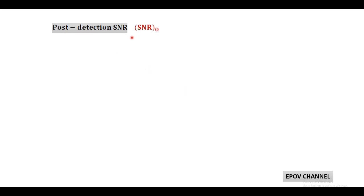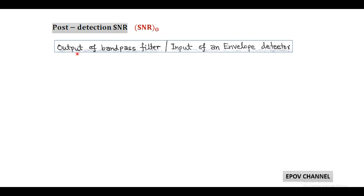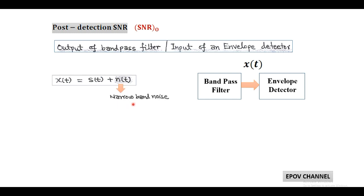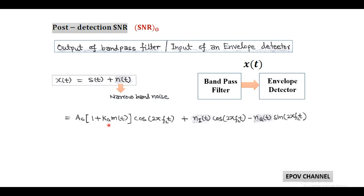Next, we find the output or post-detection SNR. For this, we consider the output of the bandpass filter, or input of the envelope detector, denoted by X(t). Here, X(t) = S(t) + N(t), where N(t) is the filtered or narrow band noise. We substitute S(t) as the double sideband full carrier signal: AC·[1 + KA·m(t)]·cos(2πfct), and N(t) as narrow band noise in terms of in-phase and quadrature components.